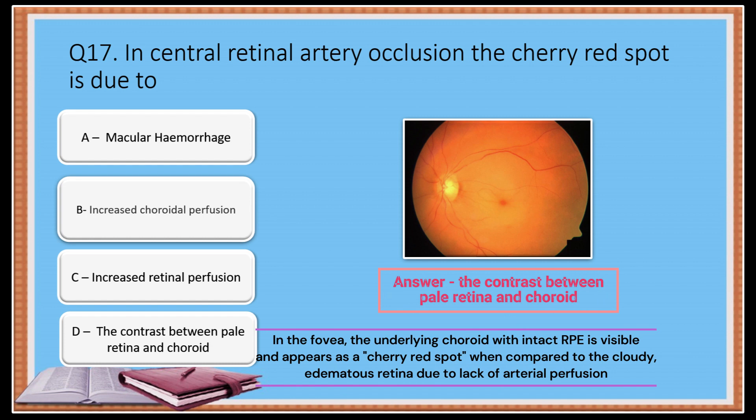In the fovea, the underlying choroid with intact RPE is visible and appears as a cherry red spot when compared to the cloudy, edematous retina due to lack of arterial perfusion.